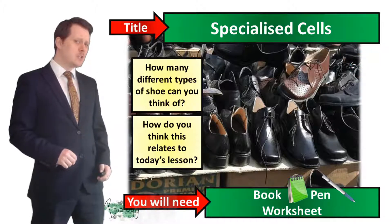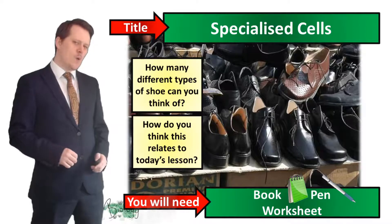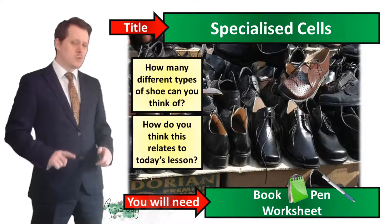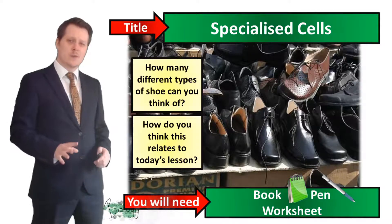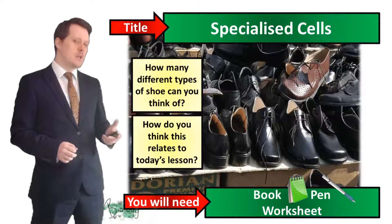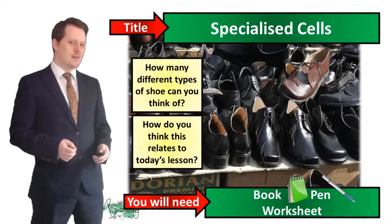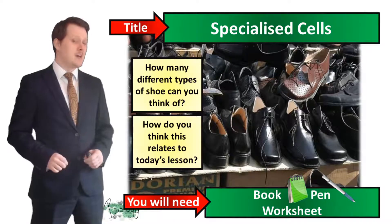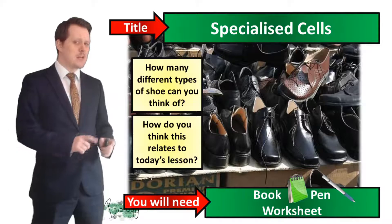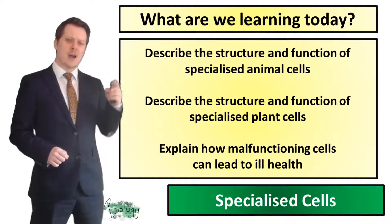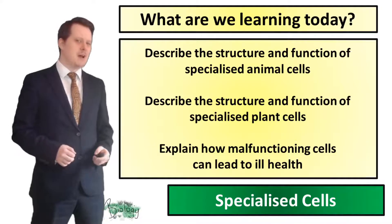Have you thought about all your different types of shoe? Did you think about why you might need so many different types? Each one of those has a particular function — it could be running, or dancing, or walking. In today's lesson we're going to be looking at different types of animal and plant cells, looking at their structure, and then seeing how that makes them really good at their function.